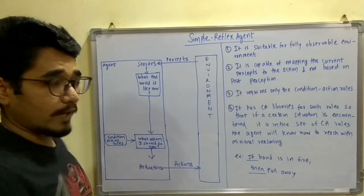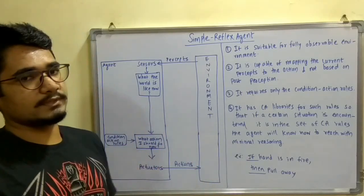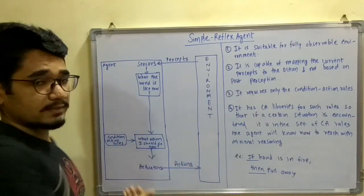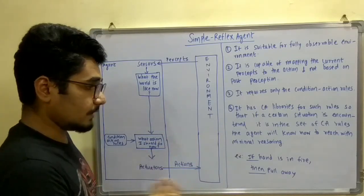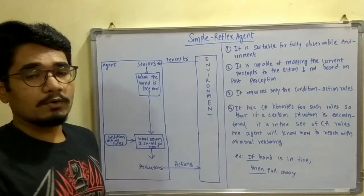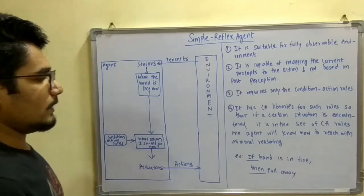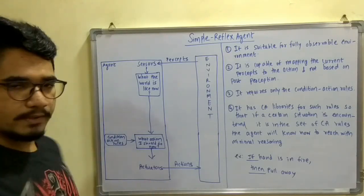Likewise, you have many kinds of CA libraries which can be set for different rules, so that if certain kind of situation it encounters in the future, and if it checks whether in the CA libraries it has those kinds of set of CA rules, then the agent will know how to act upon those situation with minimalistic reasoning. It basically speeds up the agent to act upon the environment.